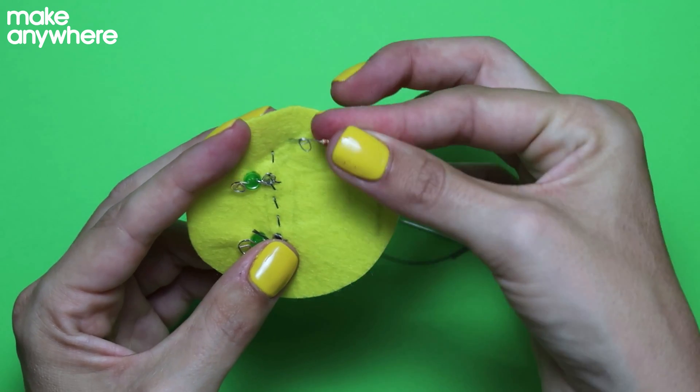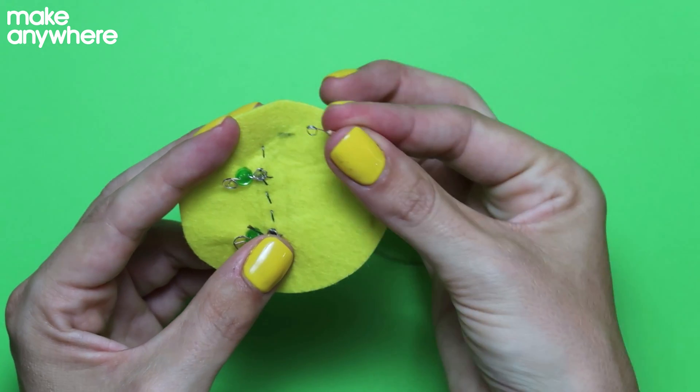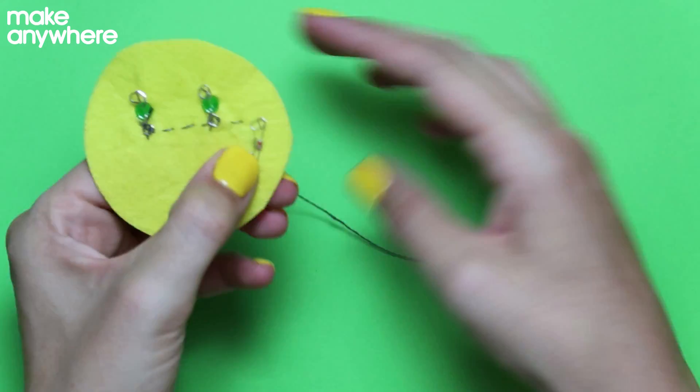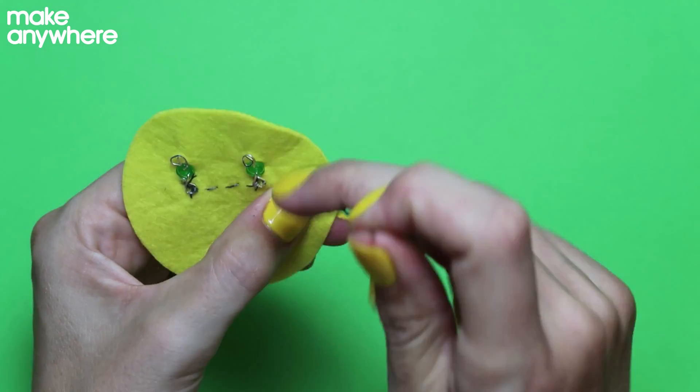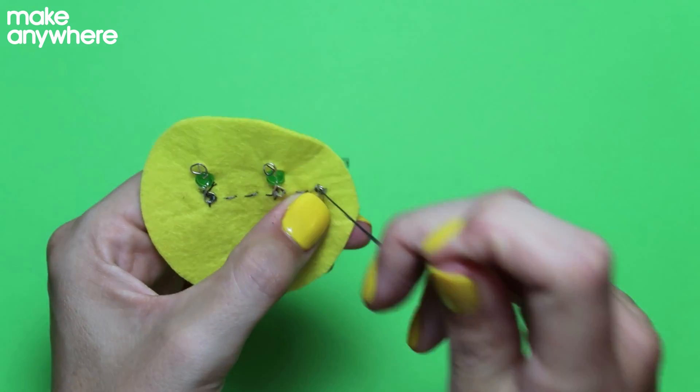Now get your resistor. Remember, it doesn't matter which way around this goes. We're going to come up through that round circle. So up and then put that over the top. And again, stitch around this three times.